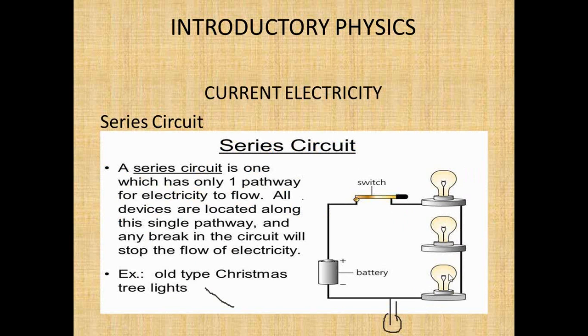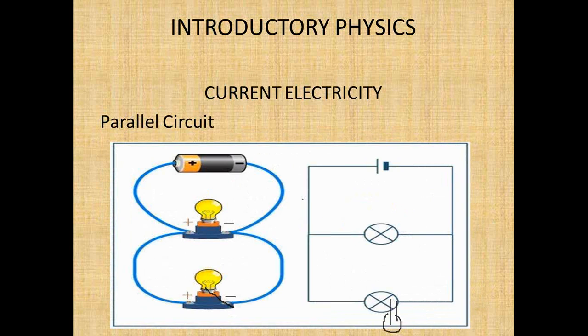As opposed to a series circuit, when you have a parallel circuit, we have two bulbs. You can see we have our power source; we attach the first bulb, and then the second bulb is attached separately. We draw the circuit with the long limb as the positive terminal and the short limb as the negative terminal, and we have branch points.